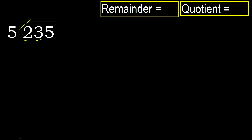5 multiplied by which number is nearest to 23, but not greater? 5 multiplied by 5 is 25 — that is greater. 5 multiplied by 4 is 20 — it's not greater, okay. 23 minus 20 is 3, bring down the next digit: 35.